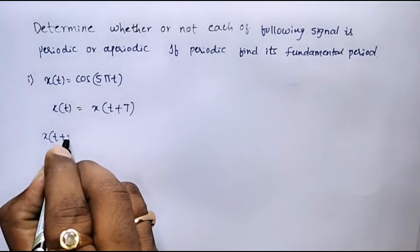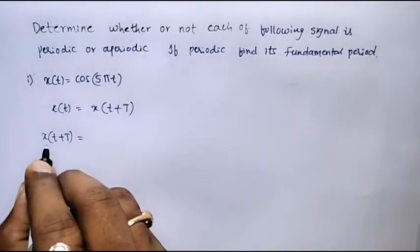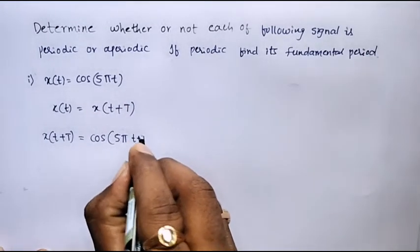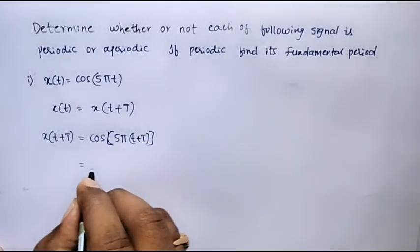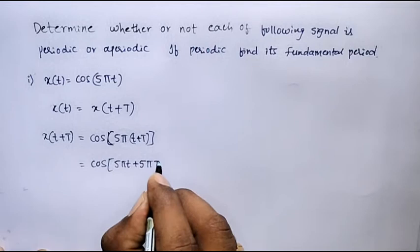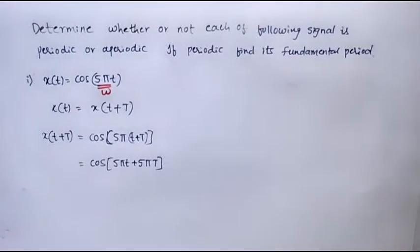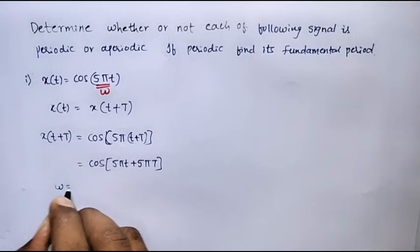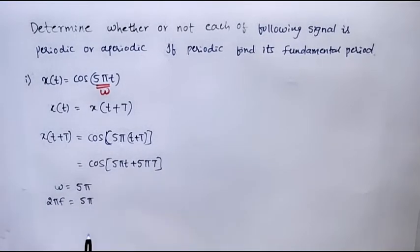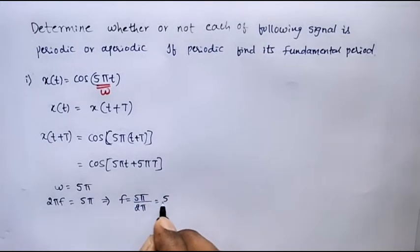x(t + T) is obtained by replacing t by (t + T). Therefore, x(t + T) = cos(π(t + T)), which simplifies to cos(πt + π·T). In this signal, we know that π is the angular frequency ω. Therefore, we can write ω = π, where ω can be represented as 2πf = π, or f = π/(2π) = 1/2.